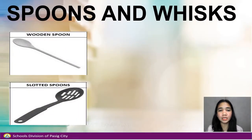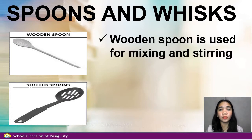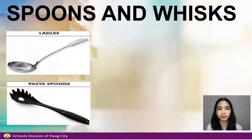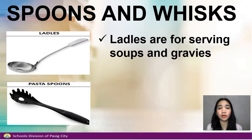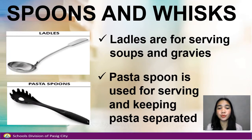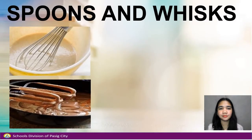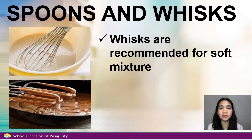Spoons and whisk. In general, wooden spoon is used for mixing and stirring. Slotted spoon is used for draining liquids from food. Ladles are for serving soups and gravies. Pasta spoon is used for serving and keeping pasta separated. Whisks are recommended for soft mixtures like butter.